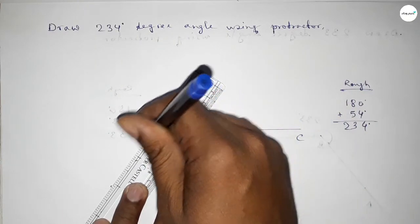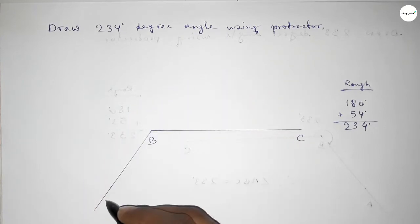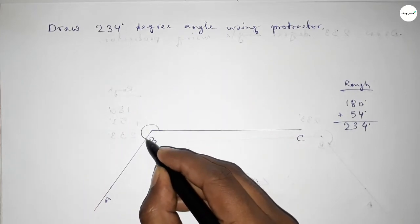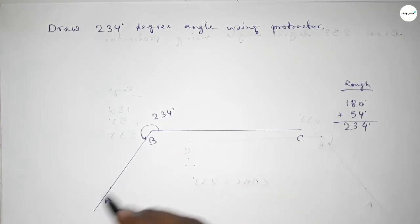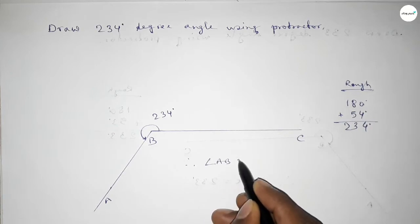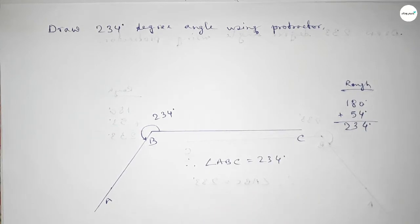then we can get 234 degree angle. Now joining this side and taking here a point, so angle ABC up to this is 234 degree. So therefore, angle ABC equal to 234 degree angle.